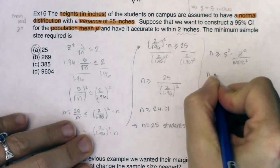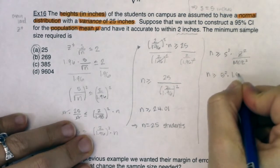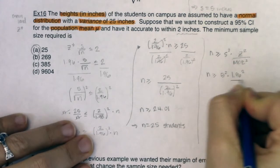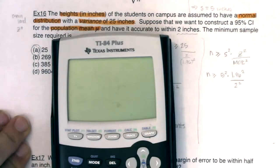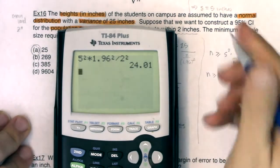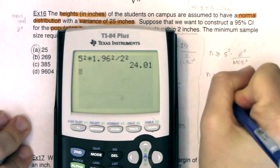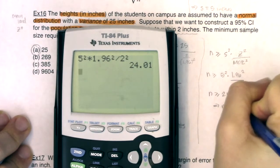All right. So how this would work is I would say n has to be greater than or equal to five squared. We know the z star critical value is 1.96 squared. And I'm going to divide that by my margin of error, which was two squared. All right. So just plug in your numbers for your particular problem. And as we do this, this would be five squared times 1.96 squared divided by two squared. What do you know? 24.01. So n still has to be greater than or equal to 24.01, which means n has to equal 25 students.